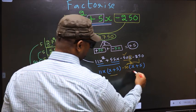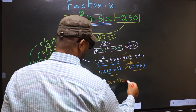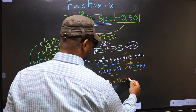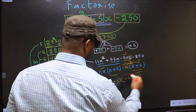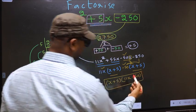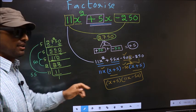Now you take out x+5 common. So here you have 11x and here -50. This is our answer. Am I clear?